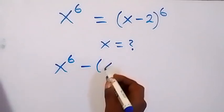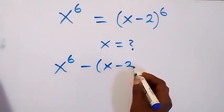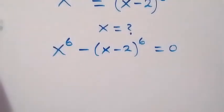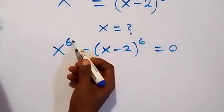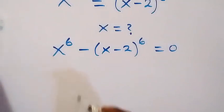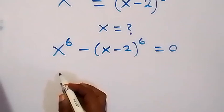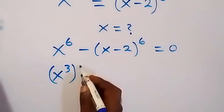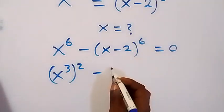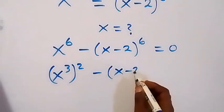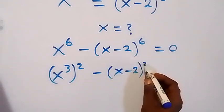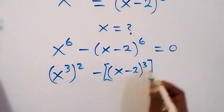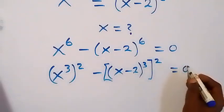Minus (x minus 2) raised to power 6, now equals 0. Then we can factor the power of 6 as 3 times 2, so that we have x raised to power 3, then raised to power 2, minus (x minus 2) raised to power 3, which is also raised to power 2, equals 0.